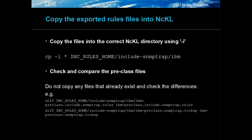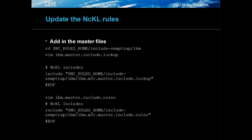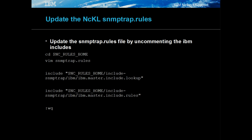Copy the exported MIB files to the NICL server where the MTrap deprobe is to run. Then copy the rules and lookup files to the include SNMP trap directory in the NICL directory. Update the master include and lookup files with the correct paths for the M2R file names, and update the NICL SNMP trapd.rules file with the new master include and lookup files.